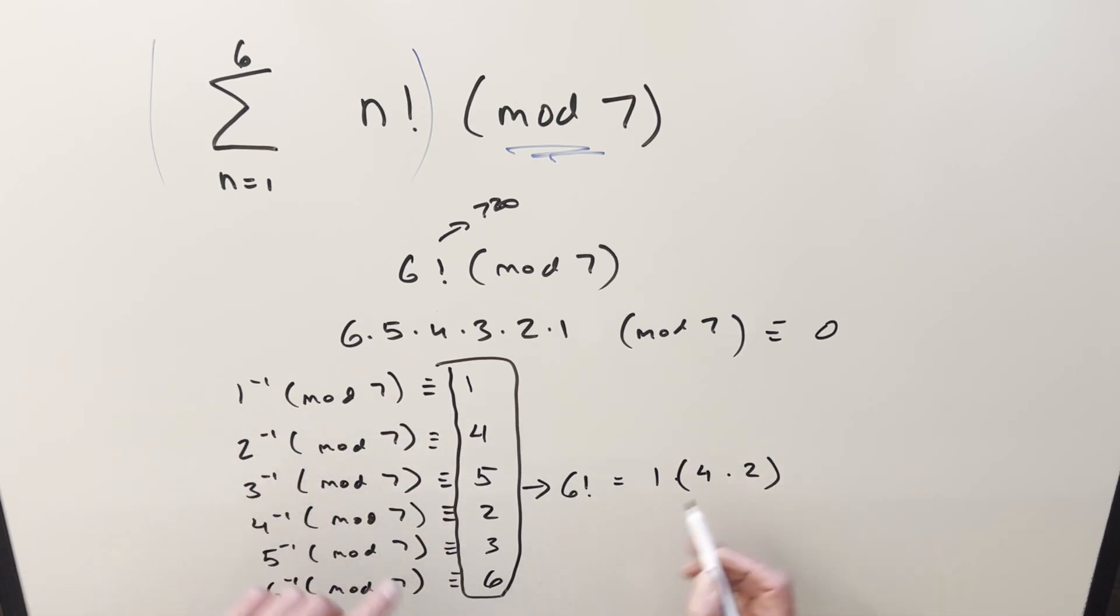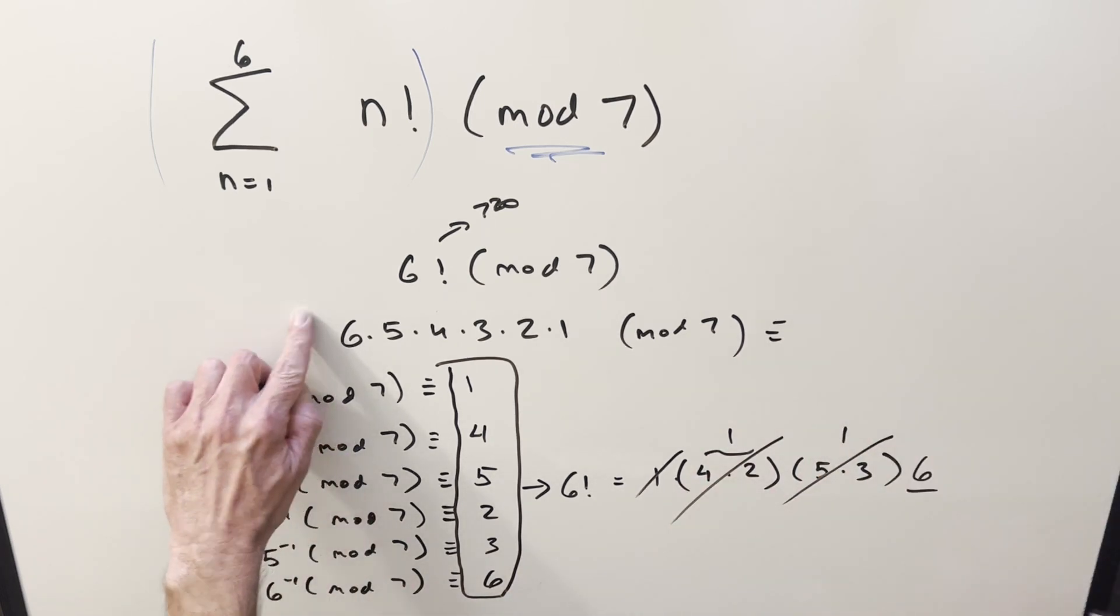So we'll do 4 times 2 here because in mod 7 that's just 1. And then next we can take the 5 and the 3, group those together and those because those are inverses that's going to be 1 as well. And then the only number that we didn't use yet is the 6. And then when I multiply out 6 factorial just going in a different order we've got 1 times 1 times 1 times 6. So our value for 6 factorial mod 7 is just 6.